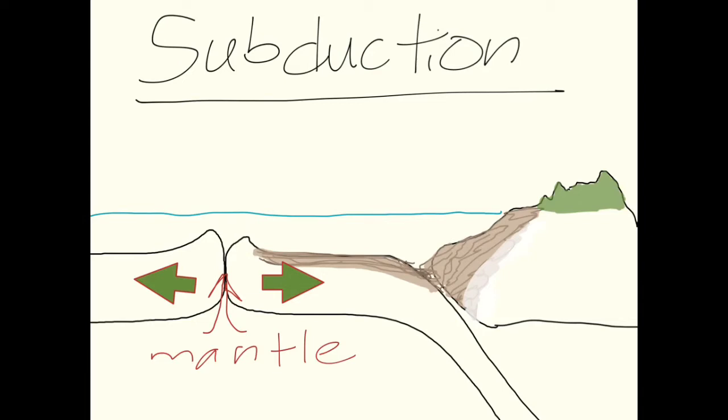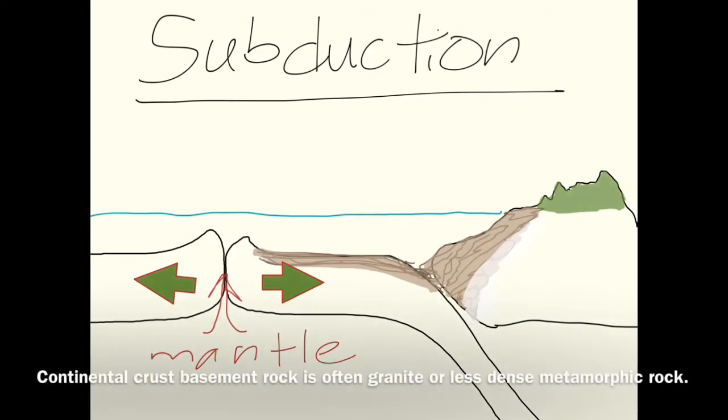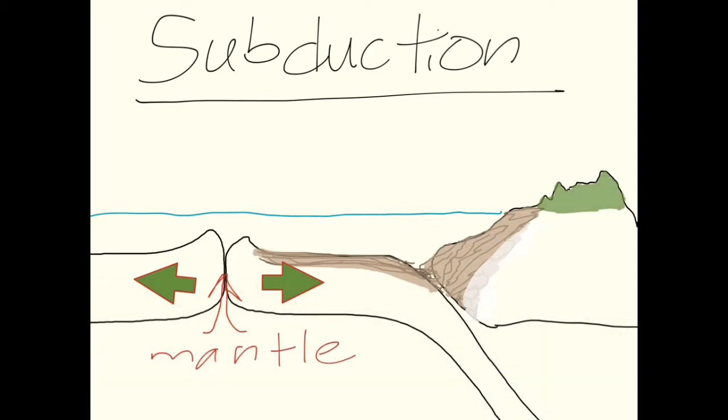At the edge of the continental plate where it runs into a continental plate, the oceanic crust is much denser. It's made of basalt, which is much heavier than the continental crust rocks like granite and diorite and andesite. So as a result, this continental crust goes below it.